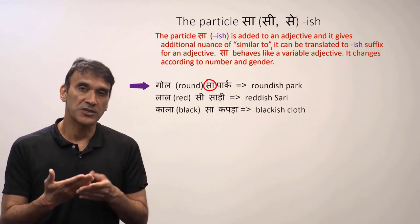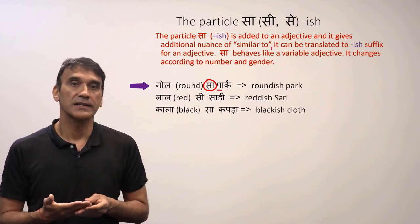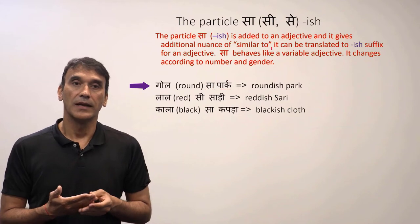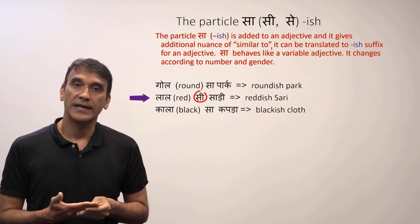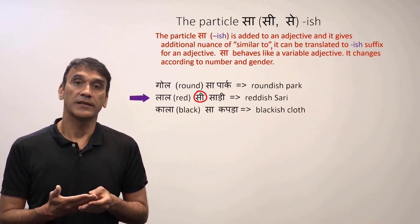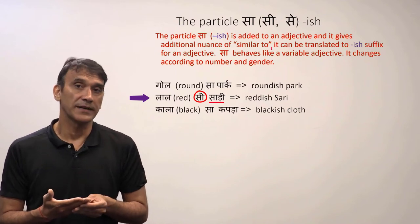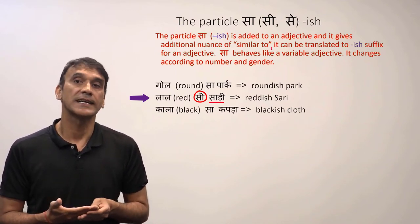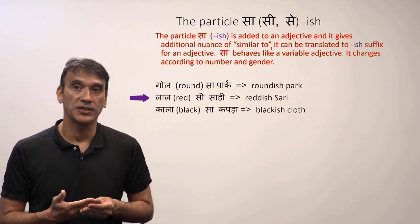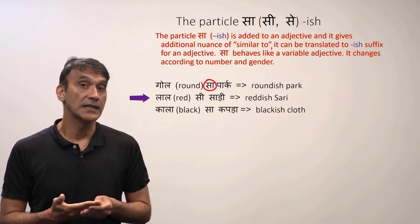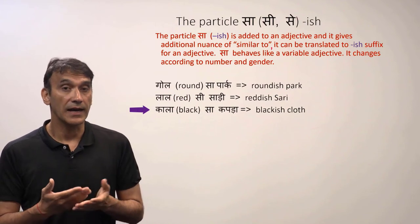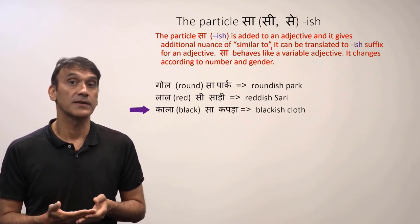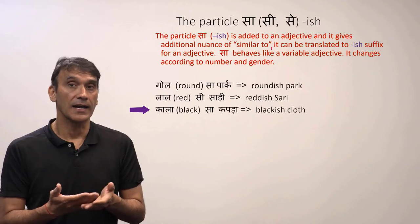'Gol sa park' means a roundish park. 'Park' is masculine, so it is 'gol sa'. 'Laal' means red; when you add 'sa' it becomes reddish. The noun here is 'saadi', which is feminine, so it is 'si' — 'laal si saadi'. So you can see that 'sa' changes according to number and gender: 'sa' for masculine, 'si' for feminine. 'Kaala sa kapda' means blackish cloth; 'kapda' is masculine, so it is 'kaala sa kapda'.